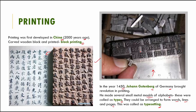Once the types were arranged, ink was applied and pressed onto paper, allowing several copies of books to be made. With multiple copies available, books became easily available and cheaper, and more and more people started buying and reading books — so reading developed greatly during this period.